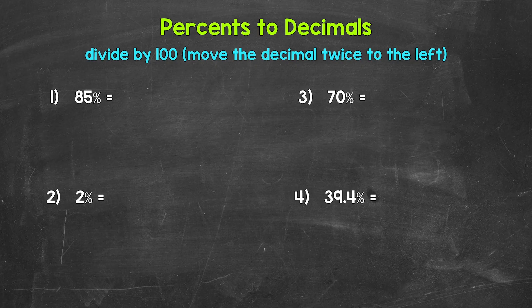Starting with number one, where we have 85%. When going from a percent to a decimal, all we need to do is divide by 100. Divide the percent by 100 and that will give us the decimal. And remember, a quick way to divide by 100 is to move the decimal twice to the left.